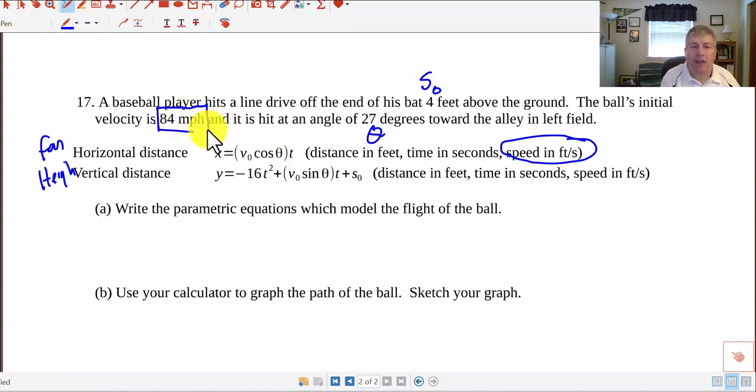So s sub zero is again our initial height, and so the four feet is our s sub zero. Our theta is 27, and t of course is time, and y is our height. So it makes sense that our y axis, or our height, has sine in it, and our x distance, or our horizontal distance, has cosine. One issue we have here is the 84 miles per hour, and we need our speed, our velocity, to be in feet per second.